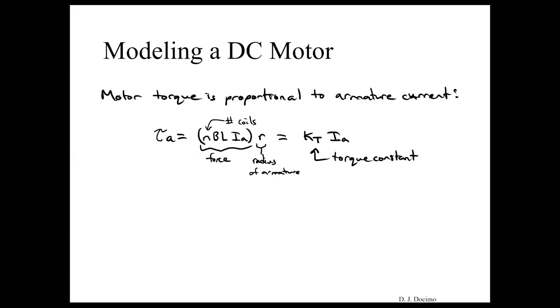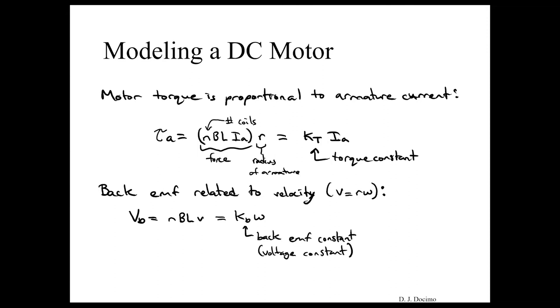The other principle that we need to use is that our back EMF is related to our velocity, which our velocity is equal to R times omega. So our back EMF, VB, is equal to N times B times L times V. Or in other words, we can lump all that together if we replace V with R omega to KB times omega. So this KB is our back EMF constant or our voltage constant.